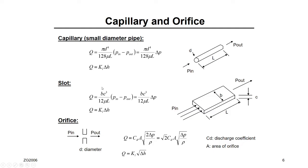For a capillary or slot, the flow inside the valve is proportional to the difference in head before and after: Q = K(H₁ − H₂), where K is a constant depending on the shape of the capillary or slot. For an orifice, the flow is not directly proportional — it is proportional to the square root of the head difference. So the flow inside the orifice (turbulent flow) is nonlinear.